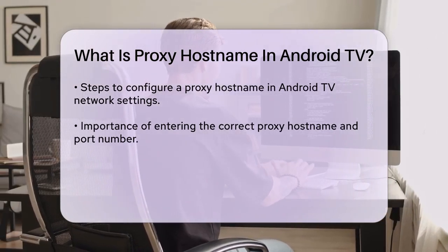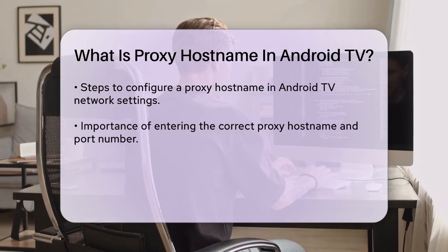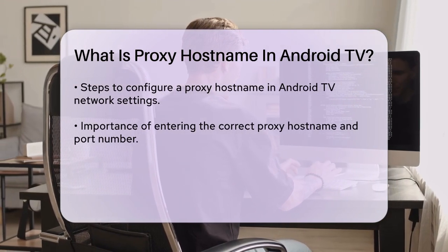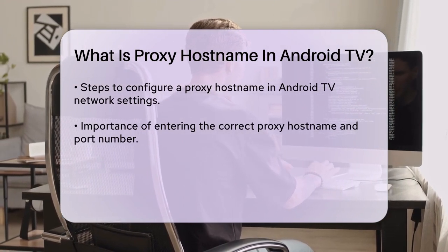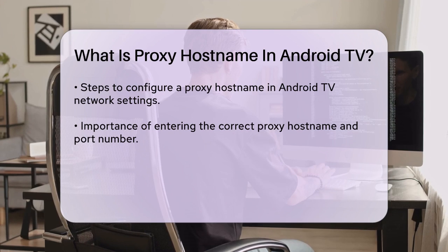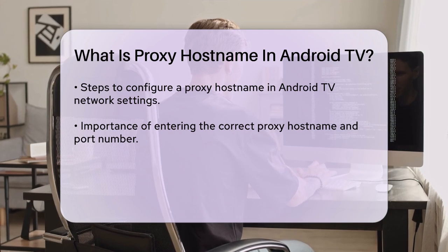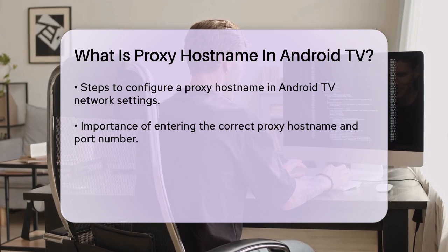To configure a proxy hostname on your Android television, you typically need to go into the network settings. Here, you can enter the proxy hostname and port number provided by the proxy service you are using.